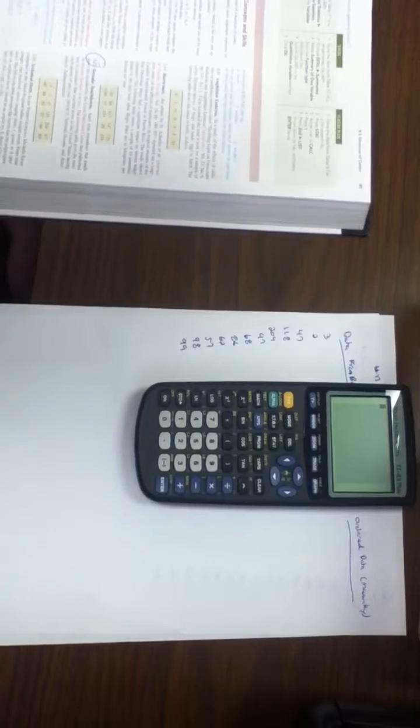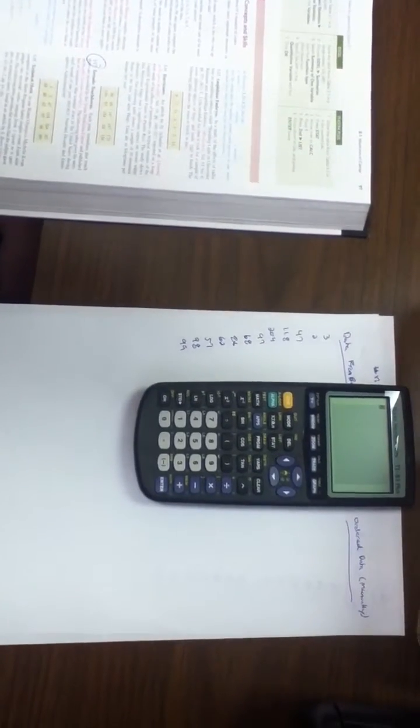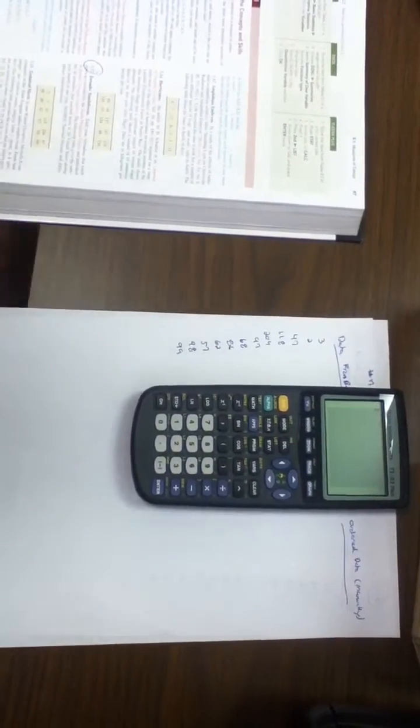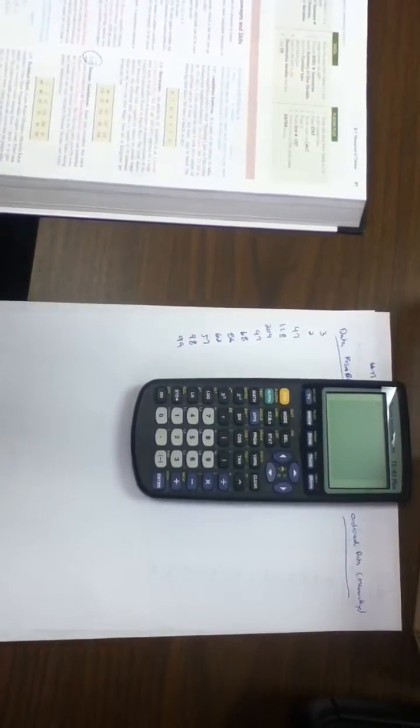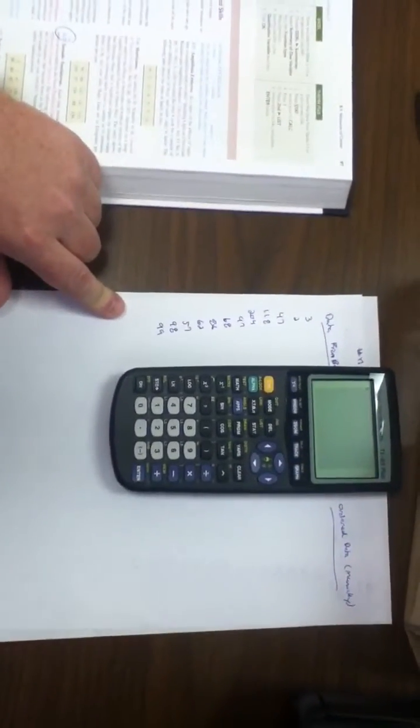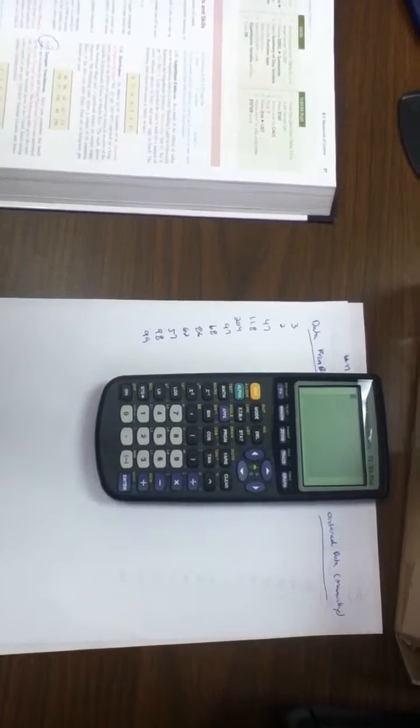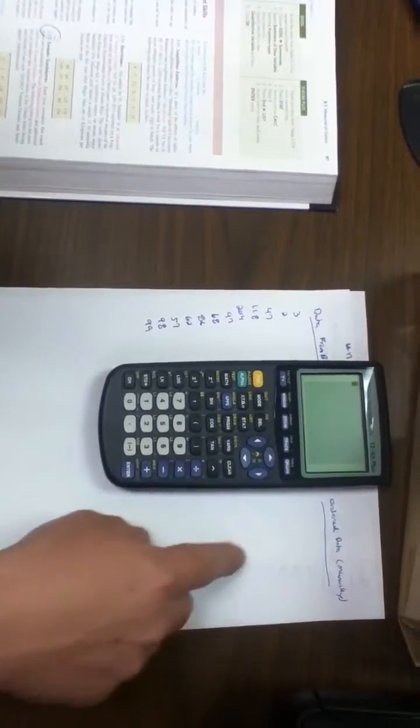First problem I'm going to do is problem number 17 on page 97. We're going to find the mean, median, and mode of this data set. I'm going to do it with the calculator. Unfortunately, the mode we've got to do manually, so I'm going to do that part over here.